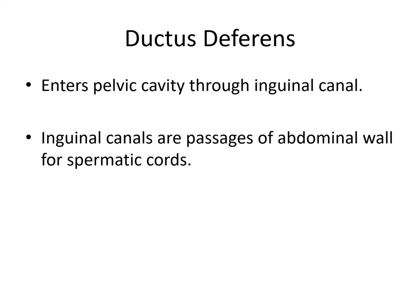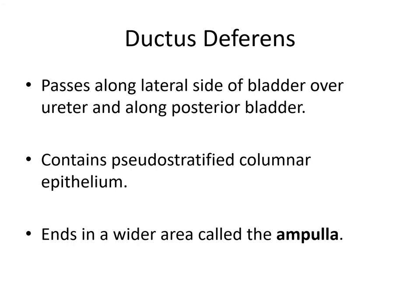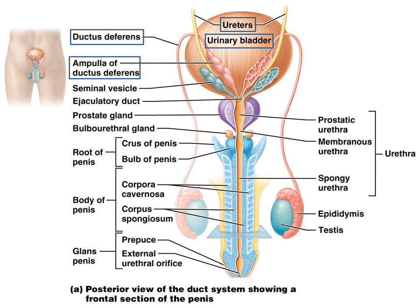The spermatic cord enters the pelvic cavity through the inguinal canal, which passes through the abdominal wall. In this diagram, you can see the spermatic cord entering the inguinal canal. The ductus deferens passes along the lateral side of the bladder, over the ureter, and along the posterior bladder, and it contains pseudostratified columnar epithelium, extending into a wider ampulla. Here's the ductus deferens extending over the urinary bladder, and here is the ampulla.